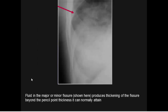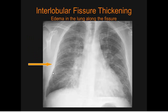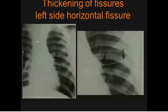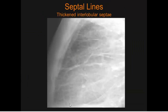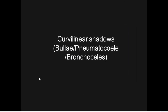Right inferior accessory fissures present as linear densities. Fluid in major and minor fissures produces thickening of the fissures beyond pencil-point thickness. The second right interlobar fissure and partially calcified diaphragmatic plaques are visible; interlobular fissure thickening indicates edema along the fissure, also seen in congestive heart failure. Left-sided horizontal fissures and septal lines seeking the interlobular septa, including pulmonary TB sequelae as a Kelvin linear shadow, complete the fissure findings.